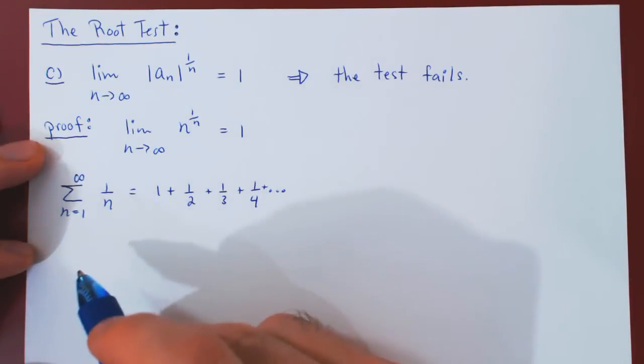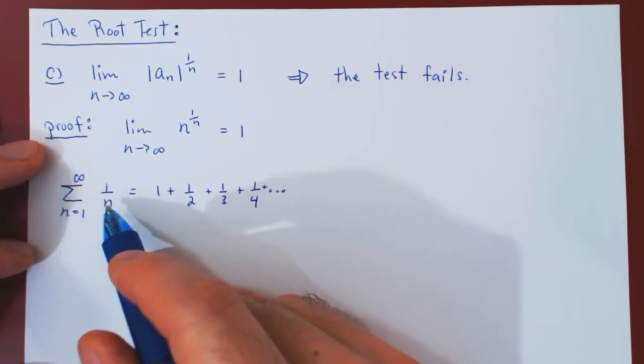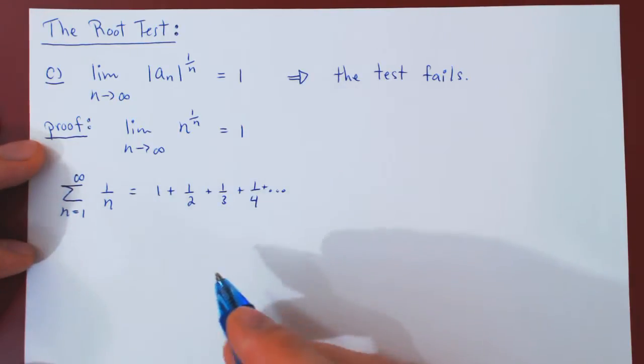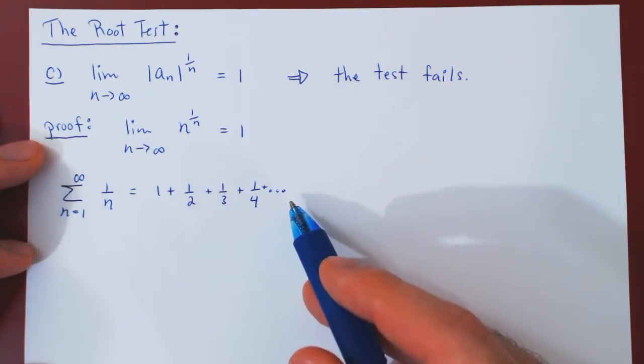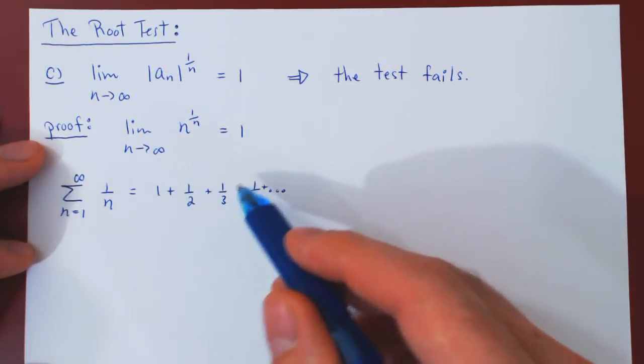This is a p-series where p equals 1. If p is less than or equal to 1, the p-series diverges, so this series diverges, and we can be more specific.